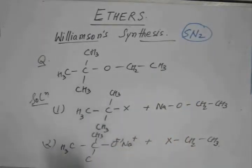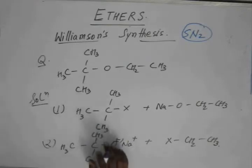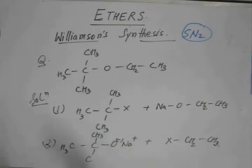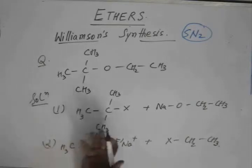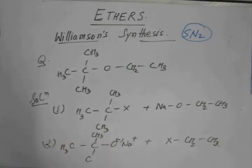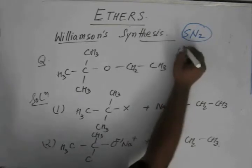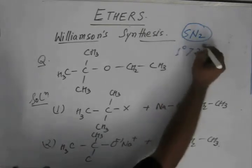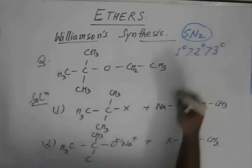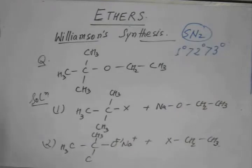I suppose I wrote SN2 over there. If by mistake I have written SN1, please pardon me. Williamson synthesis is an SN2 reaction, to be very sure. I might have misspelled and wrote SN1, maybe. Please scroll back and see if I have written it correct or not. Williamson synthesis is an SN2 reaction, it is mostly favored based on 1 degree greater than 2 degree greater than 3 degree.